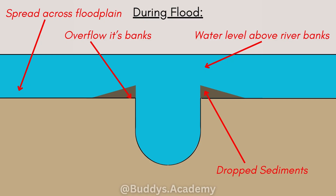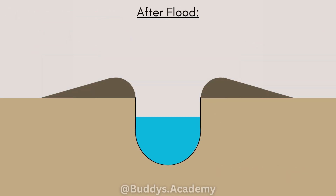Now you need to remember that the heaviest sediment is going to be deposited first, and your finer particles are then going to be carried further into the floodplain. Over time, this repeated process is then going to build up raised ridges or embankments along the sides of the river, and these are going to be known as your natural levees.